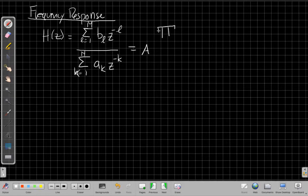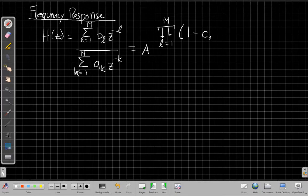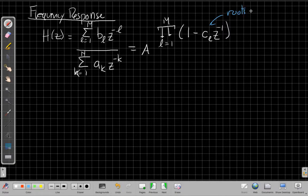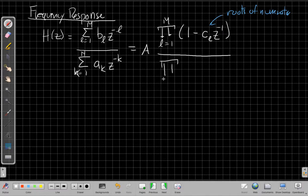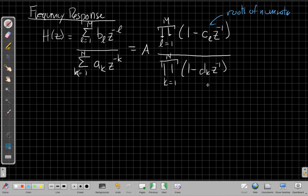We could say I could write this as a product of m terms, each of which will have some different coefficient, so I'll call it c_l z^{-1}, where these c's are the roots of the numerator. If I rewrite the polynomial in its factored form instead of the sum form, I'd have a product of all these roots in the numerator, and then a similar product as k goes from 1 to n of 1 minus d_k z^{-1}. These are the roots of the denominator, or the poles.